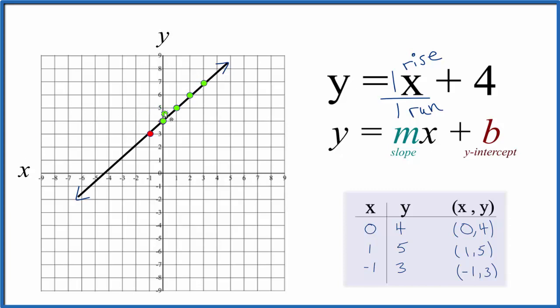Likewise, we could go the opposite direction. We could go down and over 1, down and over 1, and so on. So all these points are on the line y equals x plus 4. So we know we did this part here correctly.